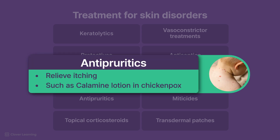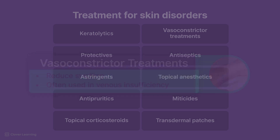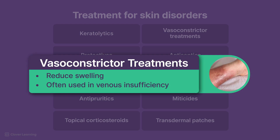Antipruritics relieve itching, such as calamine lotion, used for relief from chicken pox. Topical corticosteroids reduce inflammation, used in conditions like eczema. Vasoconstrictor treatments reduce swelling, often used in venous insufficiency.